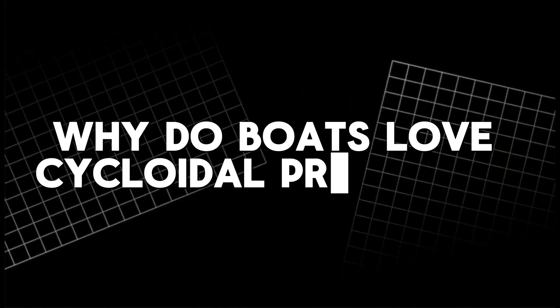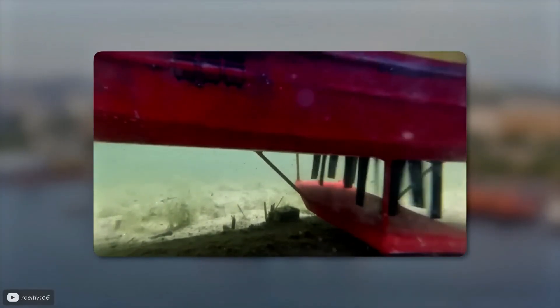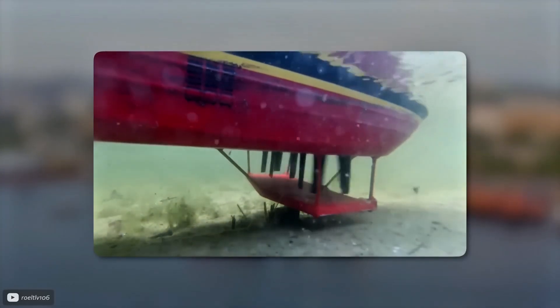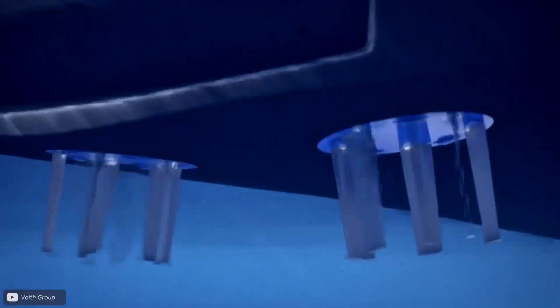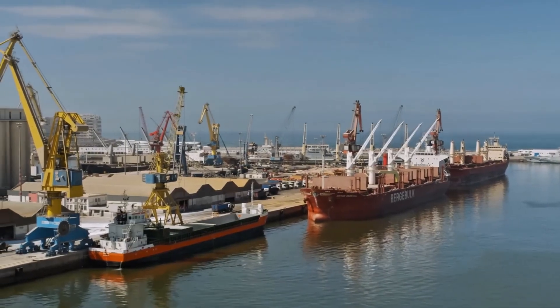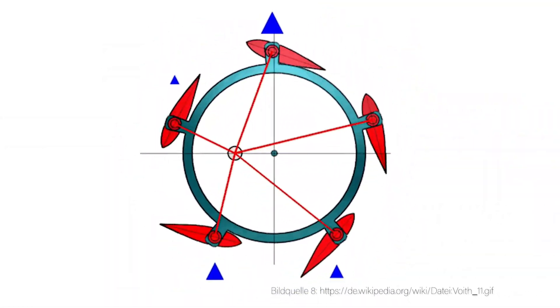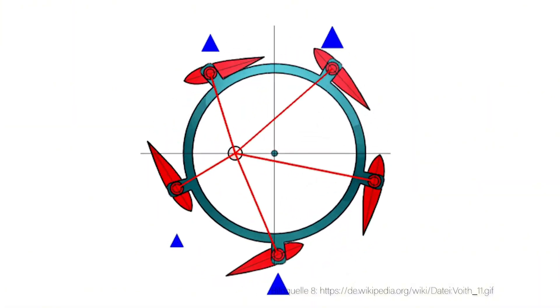So why do boats love cycloidal propellers? The short answer: maneuverability. Picture this. A traditional boat prop and rudder need space and time to turn a ship. But a cycloidal thruster does the job instantly. Each blade on the spinning disc can pivot its angle dozens of times per second. By coordinating all those little blades, the prop can point thrust in any direction, on a dime.